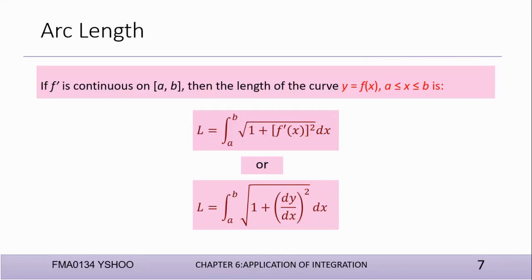This is the formal definition of our arc length. If f prime is continuous on [a, b], then the length of f(x) — this formula is only for y equals f(x), where x is between a and b. When your function is defined as y equals f(x), you are allowed to use this formula. You can use f'(x) or, since we are more familiar with dy/dx, we use that notation.